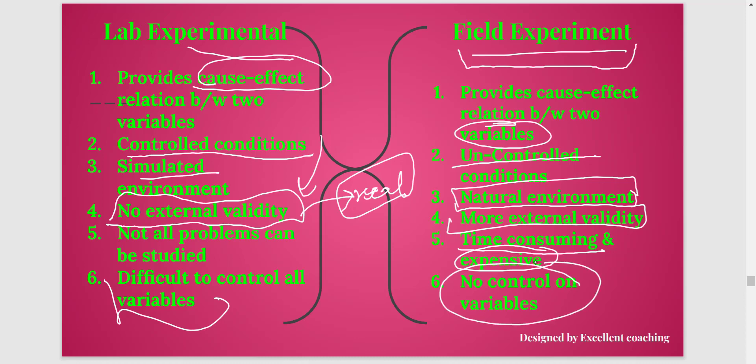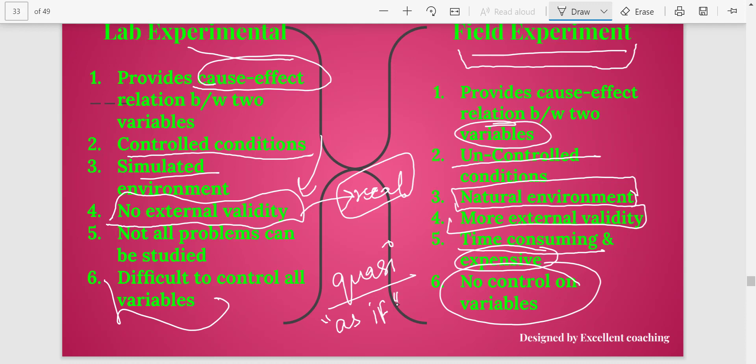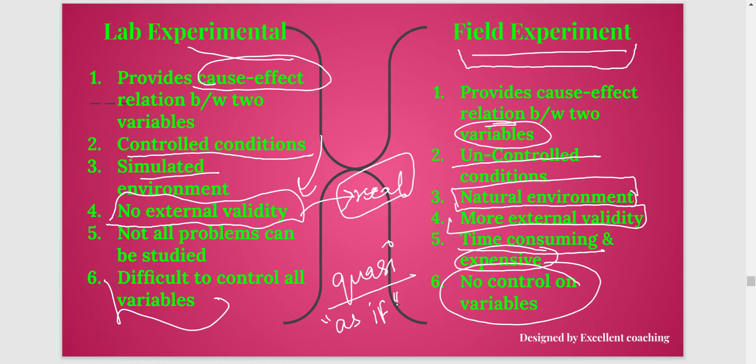As an example of a field experiment, consider the quasi-experiment. 'Quasi' is a Latin word meaning 'as if.' A quasi-experiment is where we study the effect of something that has already happened — similar to an ex-post-facto approach. For instance, it could be an earthquake or any situation that has already occurred, and you go to that field to see its effects. That is called a quasi-experiment, which is one example of a field experiment.